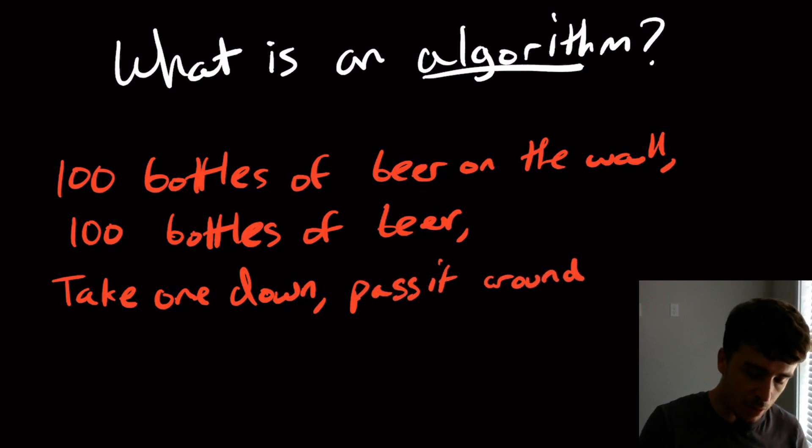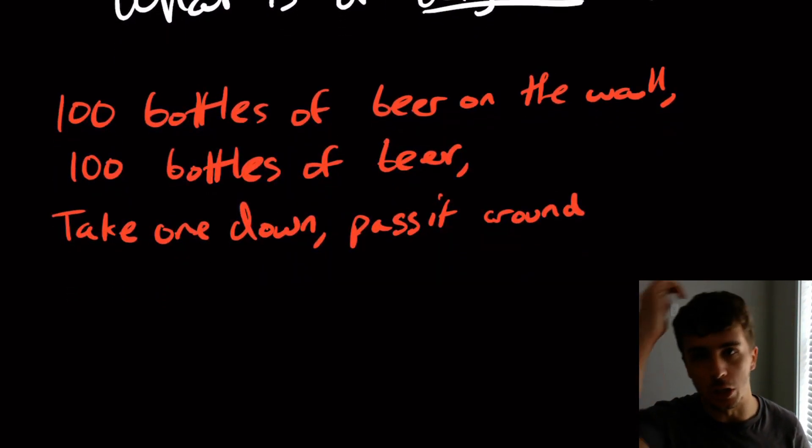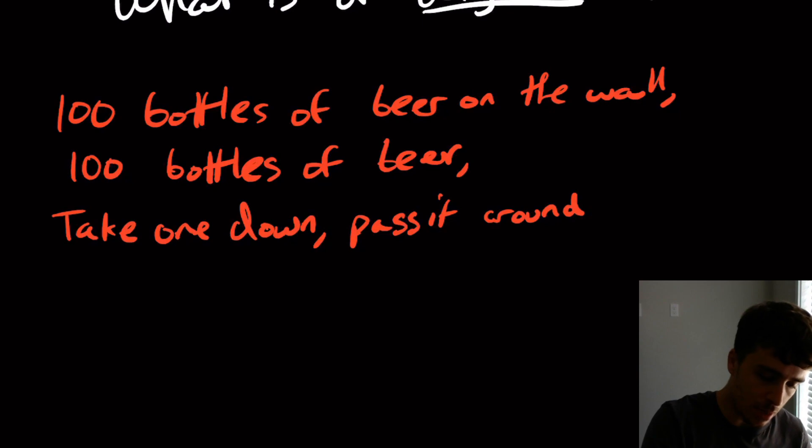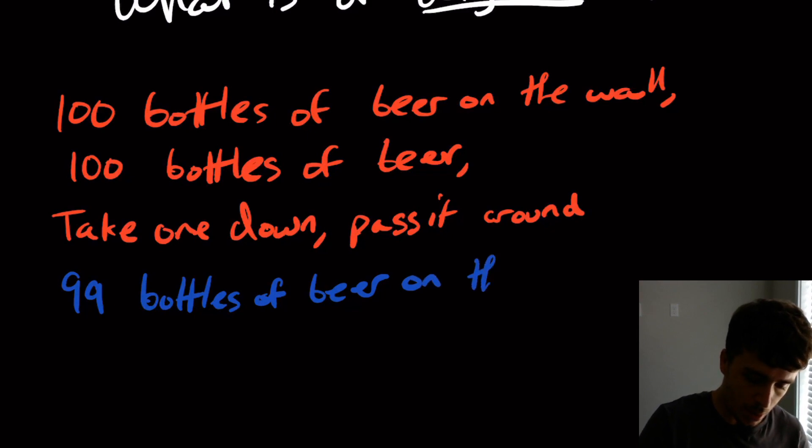And then basically, we just repeat these three lines, but with one number less. And then we just keep going until we hit one and then zero.